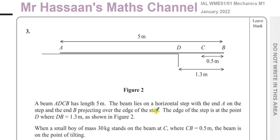Welcome back, this is Mr Hassan's Maths channel and I'm now answering question number three from the Mechanics M1 International A-level Edexcel January 2022 exam. This question is about a beam ADCB which has a length of five metres. The beam lies on a horizontal step with end A on the step and end B projecting over the edge of the step. The edge of the step is at point D, where DB is 1.3 metres, as shown in figure two.